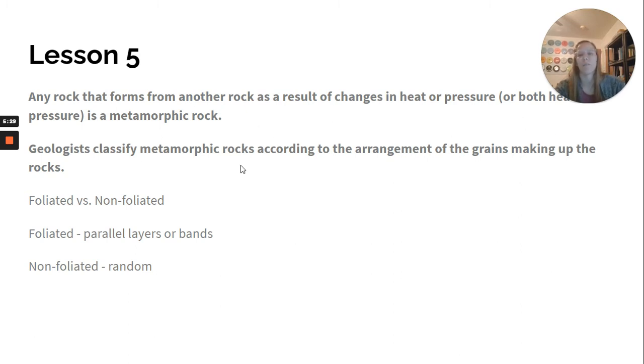Geologists classify metamorphic rocks according to the arrangement of the grains making up the rocks. So foliated or non-foliated. Foliated for parallel layers or bands, and non-foliated have random grains.